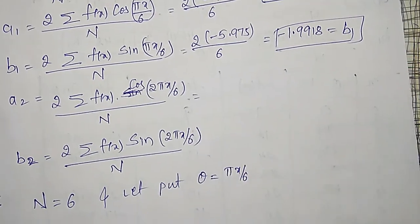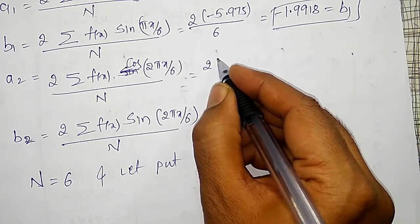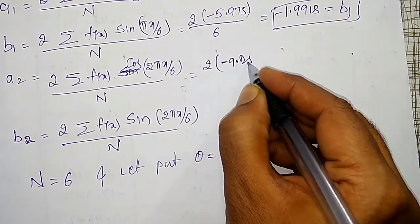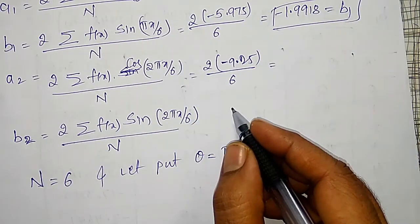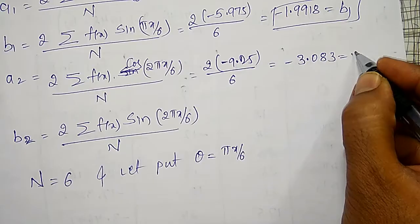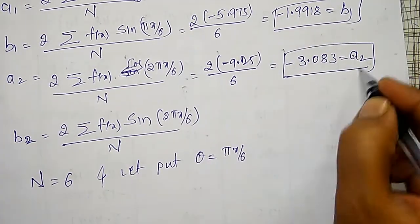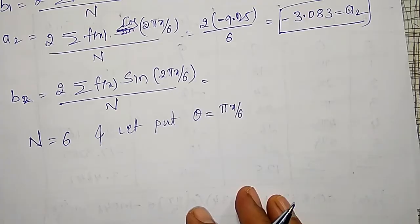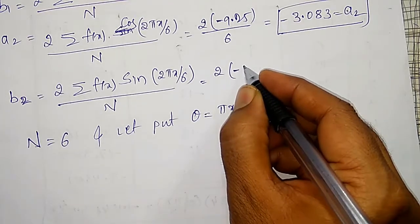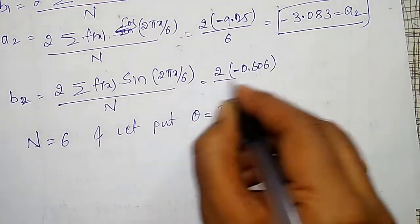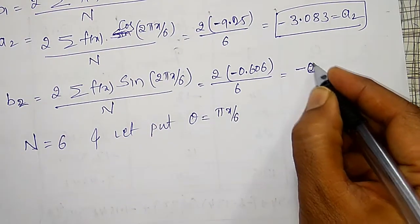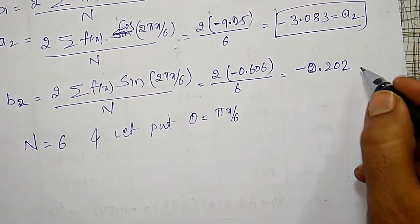To find A2: 2 times the summation of F of X times cos 2 theta, which is minus 9.25, divided by 6, gives A2 equals minus 3.083. To find B2: 2 times the summation of F of X times sin 2 theta, which is minus 0.606, divided by 6, gives B2 equals minus 0.202.